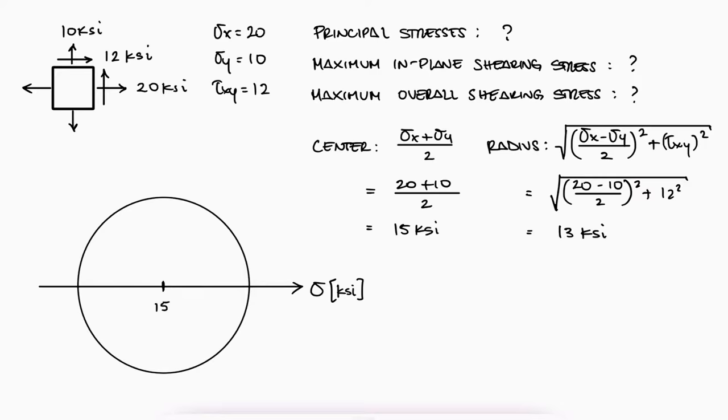The maximum stress would be 15 plus 13 on the right and 15 minus 13 on the left. With the zero location on the x-axis, we can draw the y or tau axis.